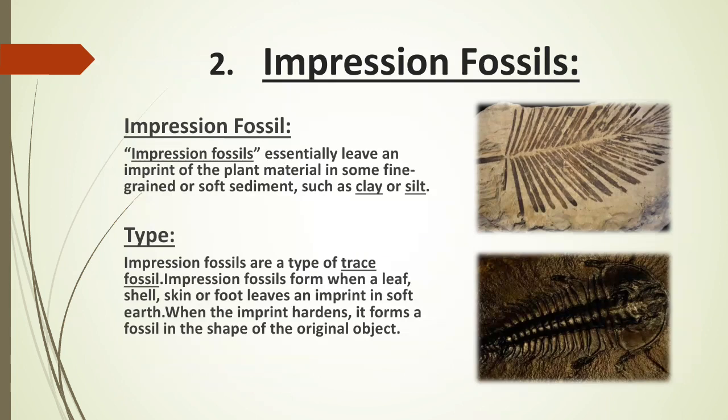Impression fossils — observe the diagrams. An impression fossil essentially leaves an imprint of plant material in some fine or soft sediments such as clay or silt. Impression fossils are a type of trace fossil. They form when a leaf, shell, skin, or footprint is imprinted in soft earth, and when the imprint hardens, it forms a fossil in the shape of the original object.